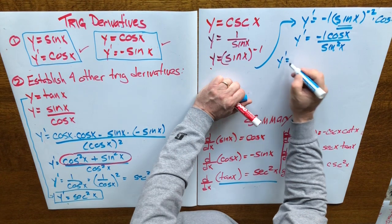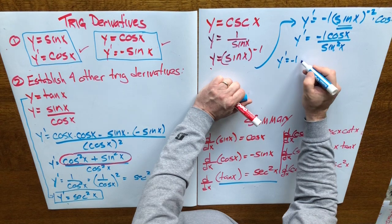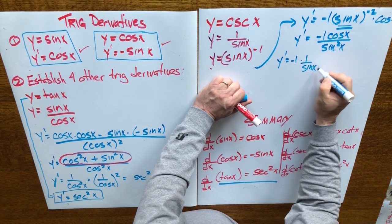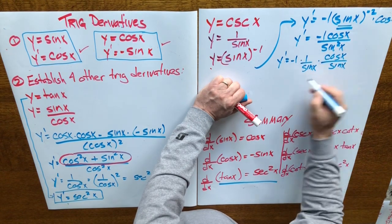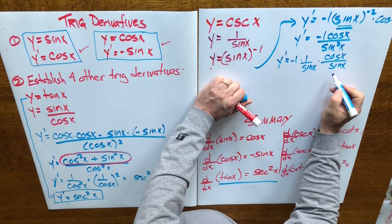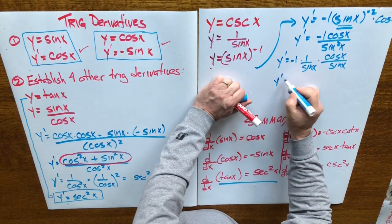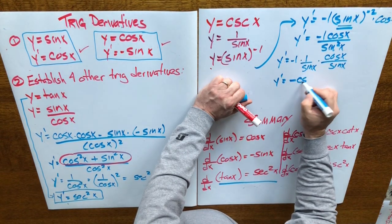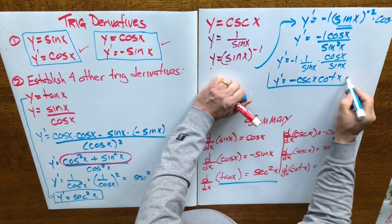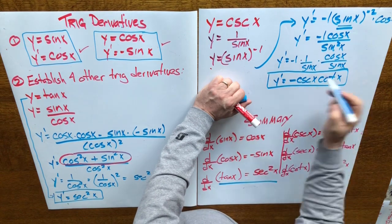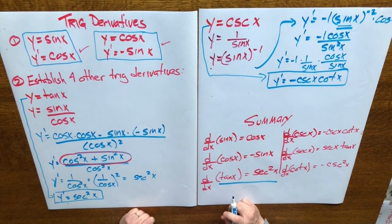Let's reorganize that a little bit. We have negative 1 times 1 over sine x times cos x over sine x. We express it this way so we can recognize these as other trig ratios. Y prime equals: negative 1 over sine x is cosecant x, and cos x over sine x is cotangent x. So the derivative of cosecant x is negative cosecant x cotangent x.